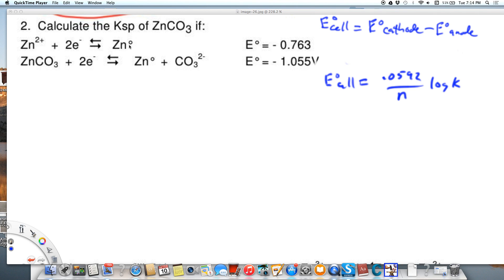We would like to use electrode potentials to calculate the solubility product constant of zinc carbonate. You know from solubility rules that zinc carbonate is not very soluble, so you would expect Ksp to be very, very small.